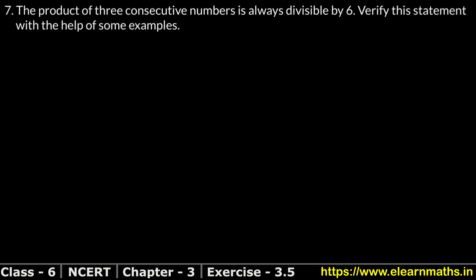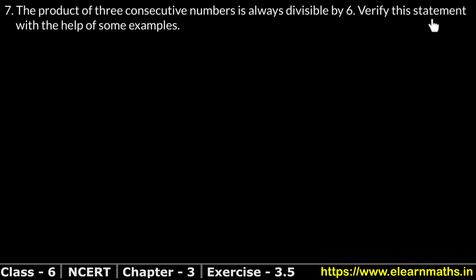Let's do question number 7 now. Question number 7 states: the product of three consecutive numbers is always divisible by 6. We have to verify this statement with the help of some examples.